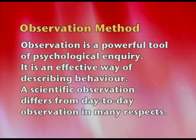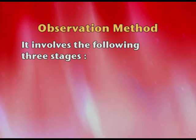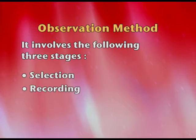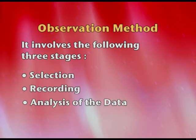Let us read the definition. Observation is a powerful tool of psychological inquiry and an effective way of describing human behavior. A scientific observation differs from day-to-day observation in three respects. Because it is scientific, it has three steps: first is selection, second is recording, and third is analysis of the data. If I have to observe somebody scientifically, I need to know what to observe and differentiate relevant behaviors from irrelevant behaviors — that is the selection process.